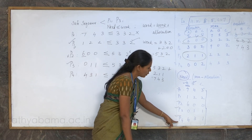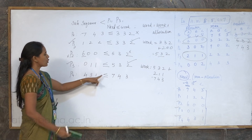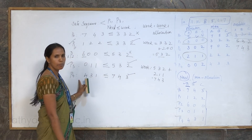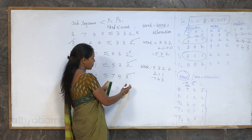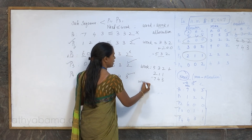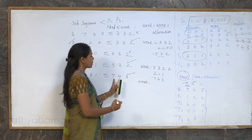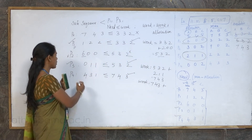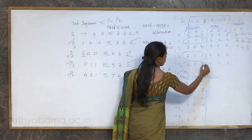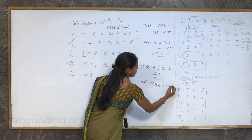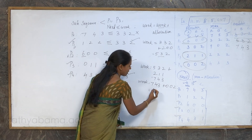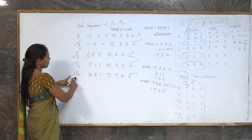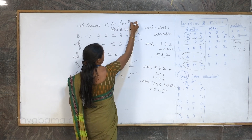Start process P4. P4 need resources are 4, 3, 1 compared with available 7, 4, 3 — condition is true. The request for P4 is granted. After P4 execution, resources held by P4, which is 0, 0, 2, are deallocated. Available becomes 7, 4 plus 0 equals 4, 3 plus 2 equals 5. Process P4 is completed and added to the safe sequence. Remaining processes P0 and P2 are not yet completed.